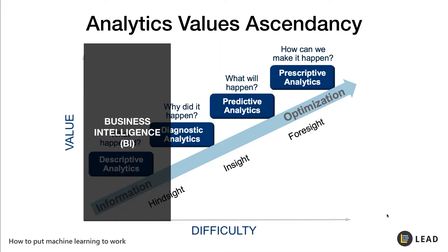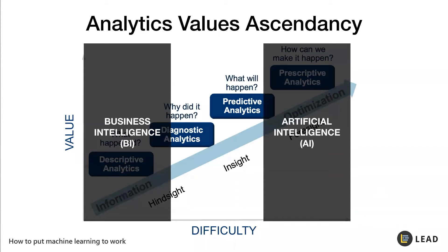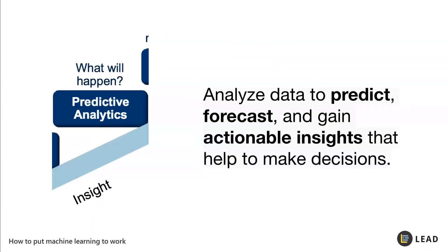What you want to look at is the area we call AI. AI happens after you have done your modeling and your predictive analytics, and it is the ultimate goal that a lot of companies and even countries are racing towards. In order to achieve that, we need this technique called predictive analytics — using machine learning models or statistical models to analyze our data, build models that can predict, forecast, and gain actionable insights that help stakeholders make decisions.